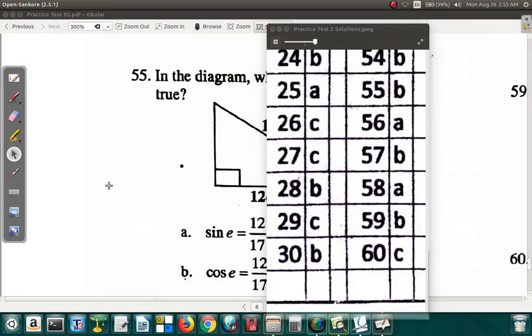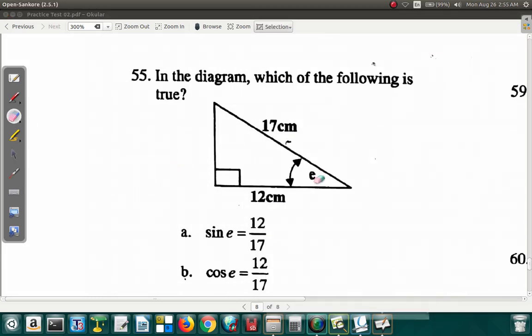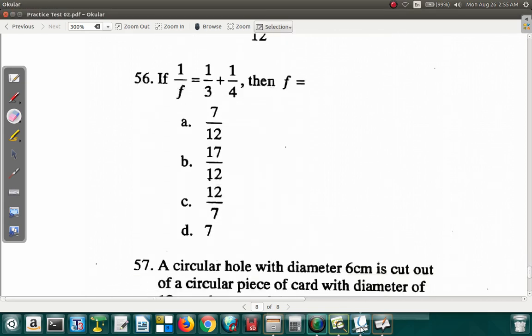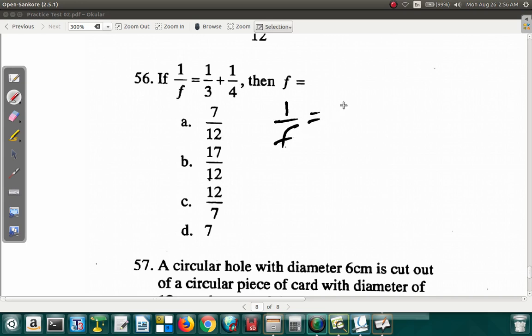Then we look at question 56. On question 56, if 1 over F is equal to 1 third plus 1 quarter, then F equals? So 1 over F is equal to 1 over 3 plus 1 over 4. What is F?